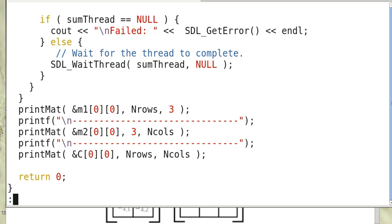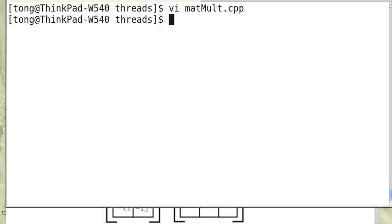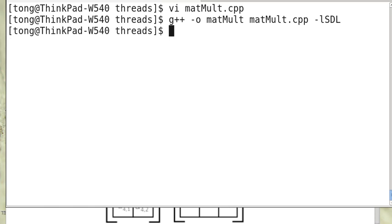So we can compile this. g++ -o and the source. We have to link that with the SDL library. So it compiles.